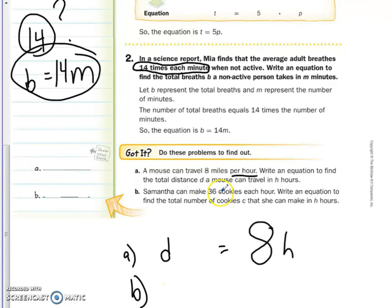Letter B, Samantha can make 36 cookies each hour. Write an equation to find the total number of cookies C that she can make in H hours. Again, it says here 36 cookies each hour. Again, just like letter A, you multiply the number of cookies by the hour. This will give you your total amount of cookies.